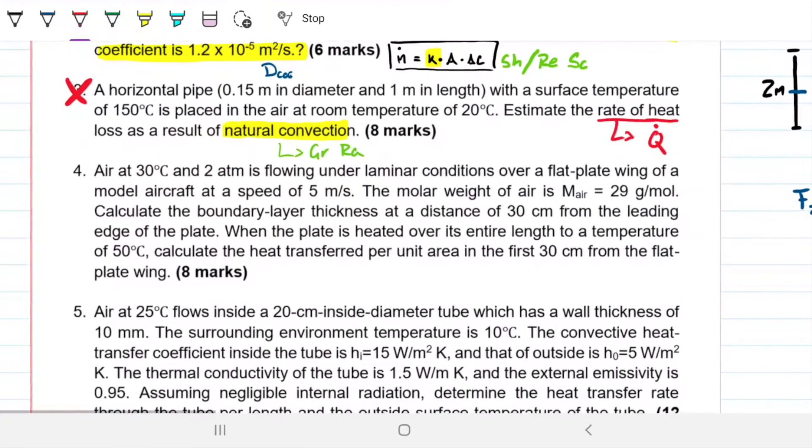Problem number 4 is about flat plate convection. Air at 30 degrees Celsius and two atmospheres is flowing under laminar conditions over a flat plate wing of a model aircraft at a speed of 5 meters per second. The molar weight of air is 29 grams per mole. Calculate the boundary layer thickness at a distance of 30 centimeters from the leading edge of the plate. And when the plate is heated over its entire length to a temperature of 50 Celsius, calculate the heat transfer per unit area in the first 30 centimeters from the flat plate wing.